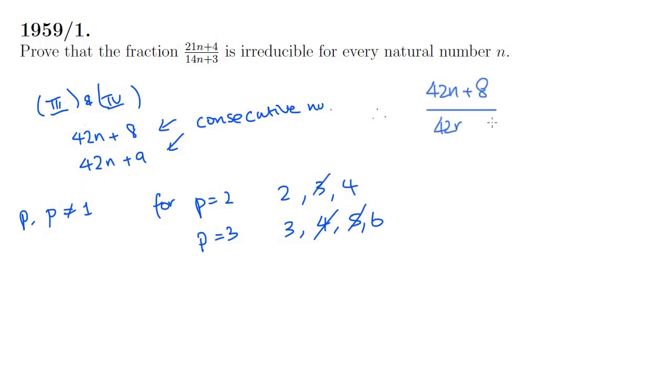And so, 42n plus 8 over 42n plus 9 is an irreducible fraction. And let's recall how we got to this fraction. We got to the numerator by multiplying 21n plus 4 by 2. And we got to the denominator by multiplying 14n plus 3 by 3. We note that 2 and 3 are also consecutive numbers. That is to say, 2 thirds as a fraction is irreducible. So, the other part of this fraction, 21n plus 4 over 14n plus 3, must also be irreducible.